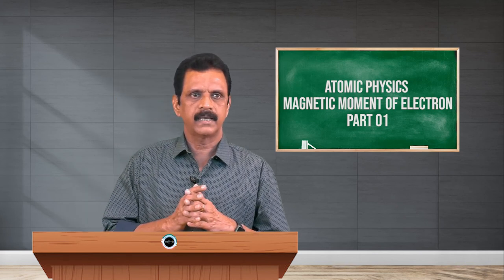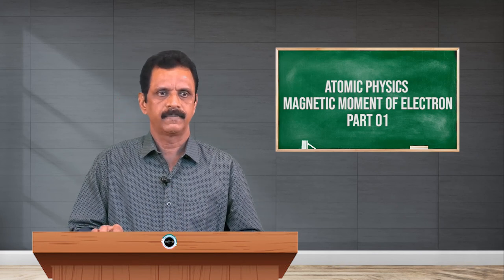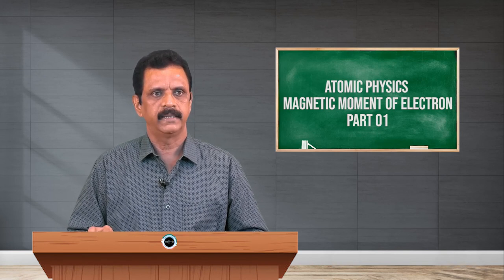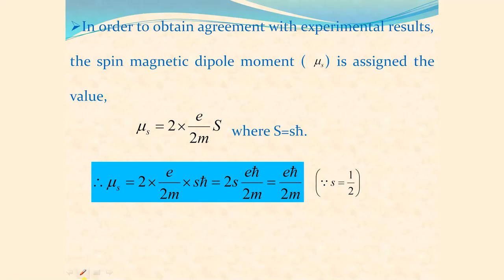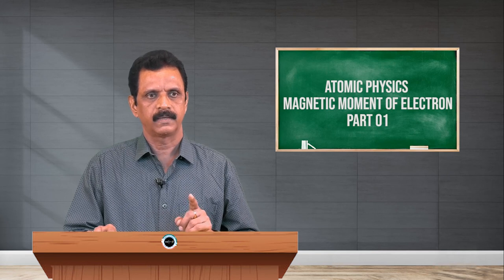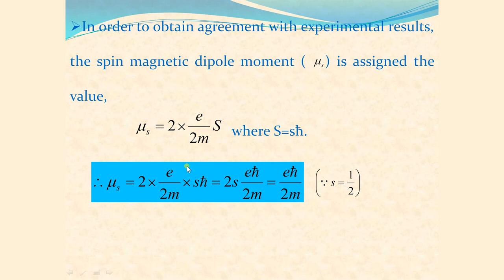However, this is calculated by an analogy technique. The assigned value of spin magnetic moment is mu_s = 2 × (E/2m) × s, where s = s·ħ. So mu_s = 2 × (E/2m) × s·ħ. Since the spin quantum number s = 1/2, the factor of 2 and 1/2 cancel, giving mu_s = Eħ/2m, which equals one Bohr magneton. This differs from orbital motion where mu_l = (E/2m) × l.